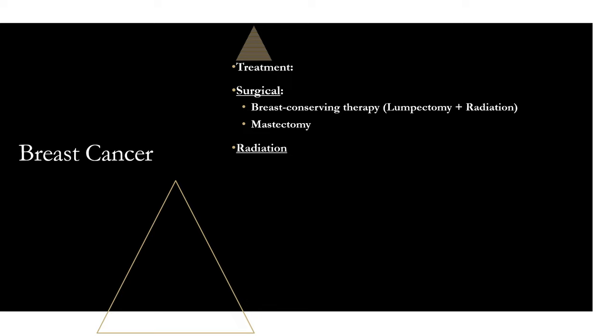With breast cancer there's something known as receptor-positive breast cancer. Some patients have positive receptors that can be influenced by certain hormones and proteins, causing the cancer to grow and spread. There are three subgroups to know: hormone receptor positive (estrogen or progesterone receptors), HER2 positive (human epidermal growth factor), and patients who are negative for all three — called triple negative.